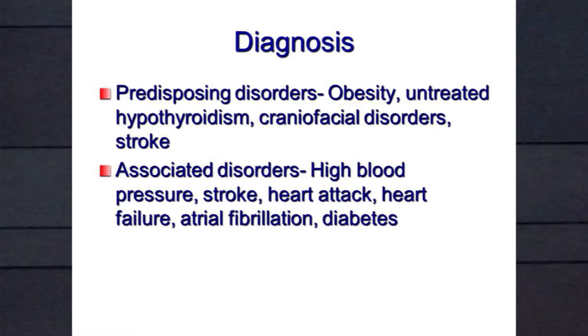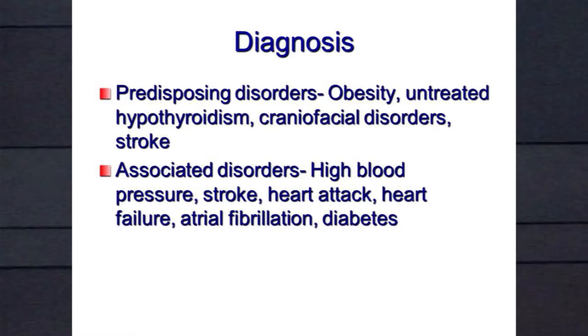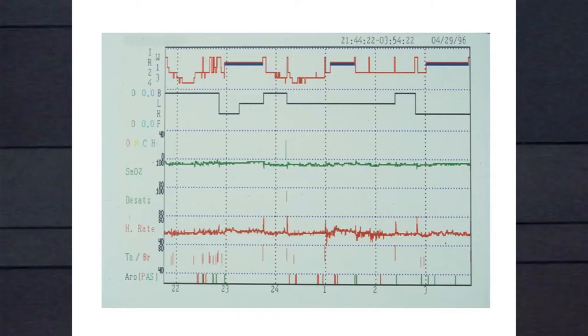How do we make the diagnosis? We look for predisposing disorders — most important is obesity. Because we're in the middle of an obesity epidemic, there is an obstructive sleep apnea epidemic as well. People with hypothyroidism, some craniofacial disorders, and stroke too. Sleep apnea is an independent risk factor for high blood pressure, stroke, heart attack, heart failure, atrial fibrillation, and diabetes — above and beyond diabetes and obesity.